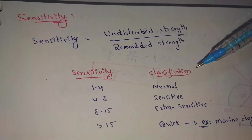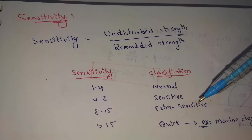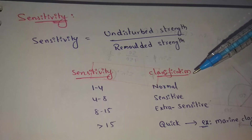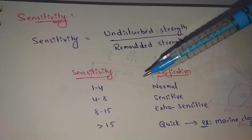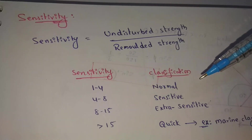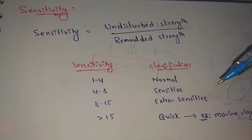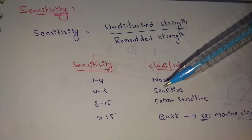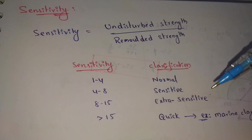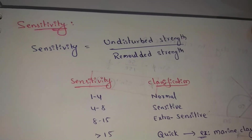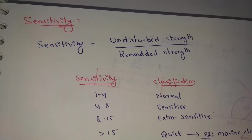The sensitivity value differs by soil type and classification. A value of 1 to 4 is normal soil. A value of 4 to 8 is sensitive soil. 8 to 15 is extra sensitive soil. Greater than 15 is quick soil — an example of which is marine clay.